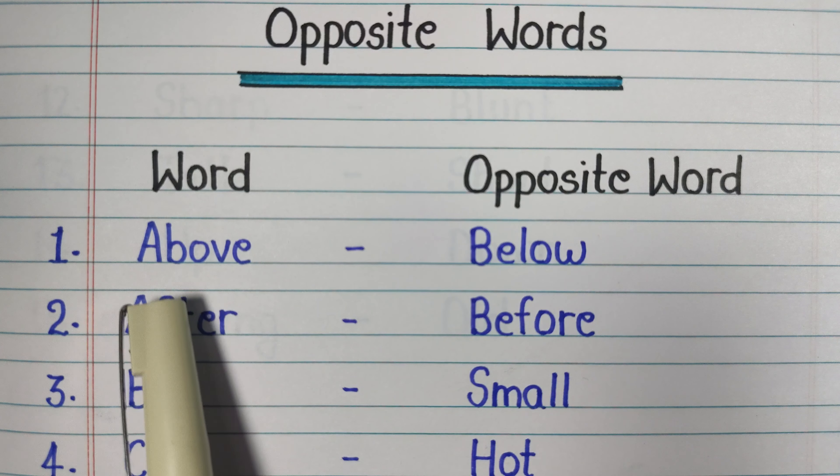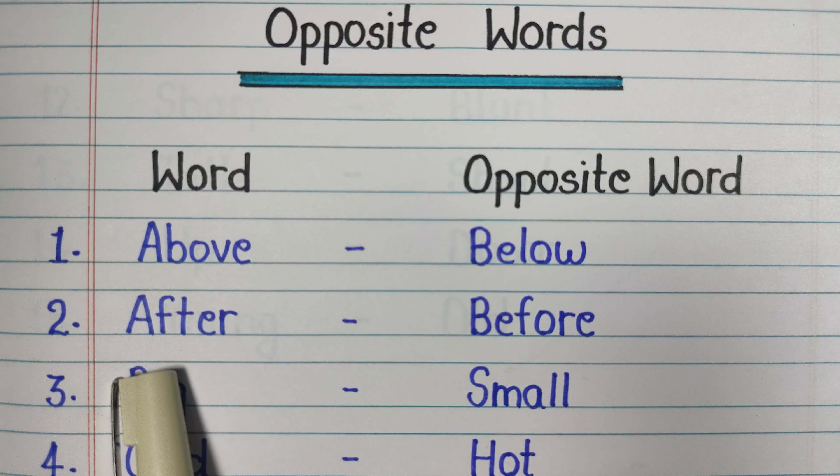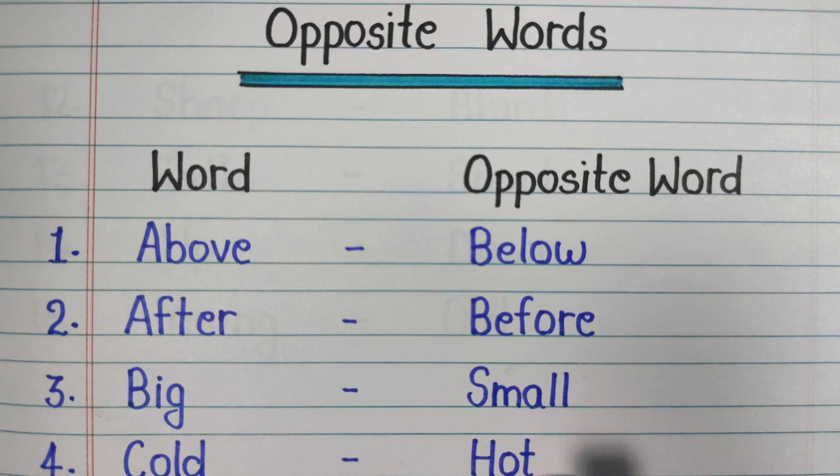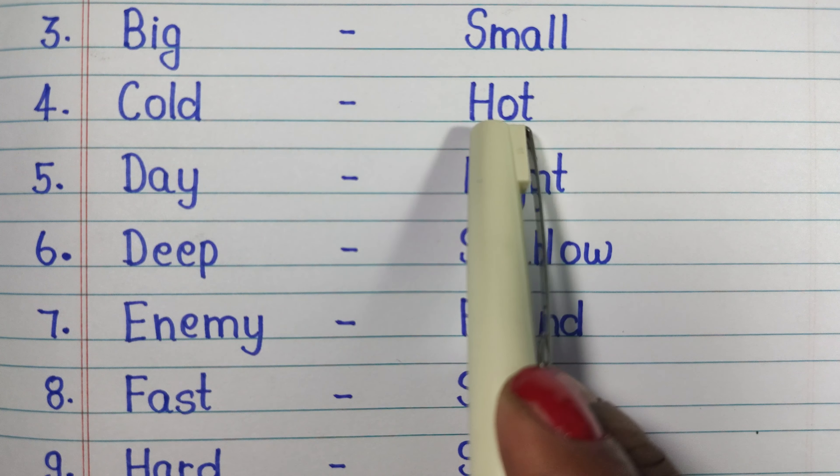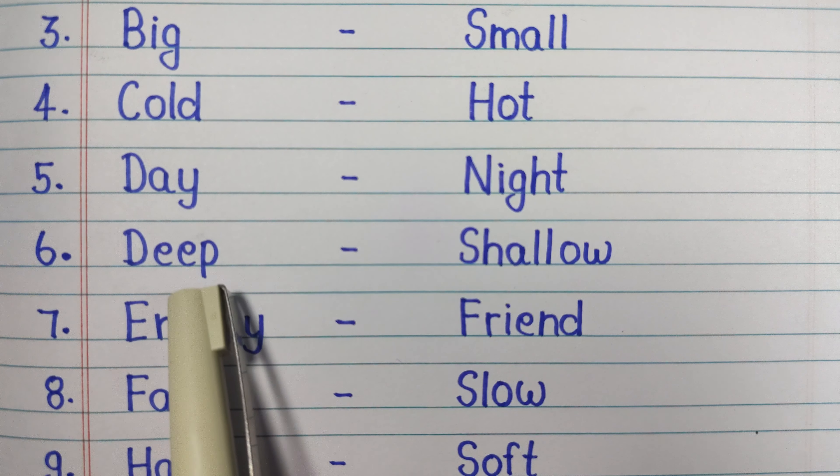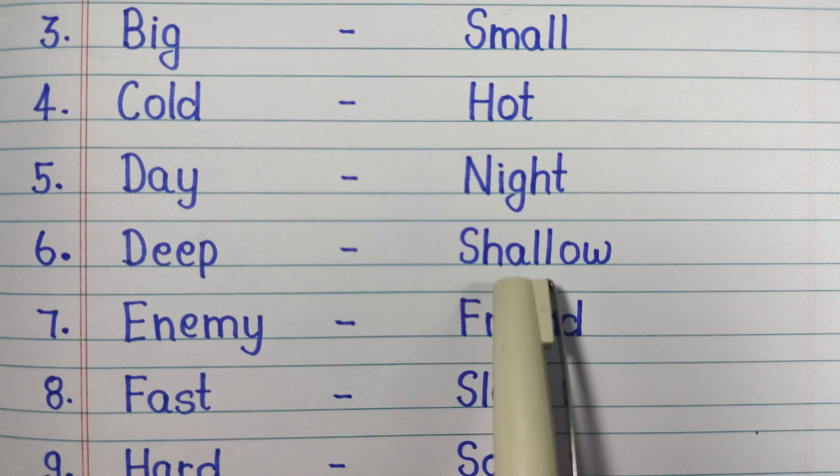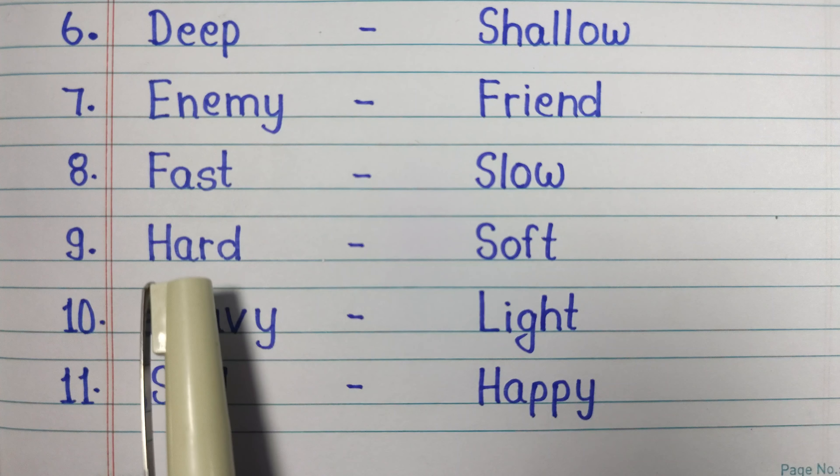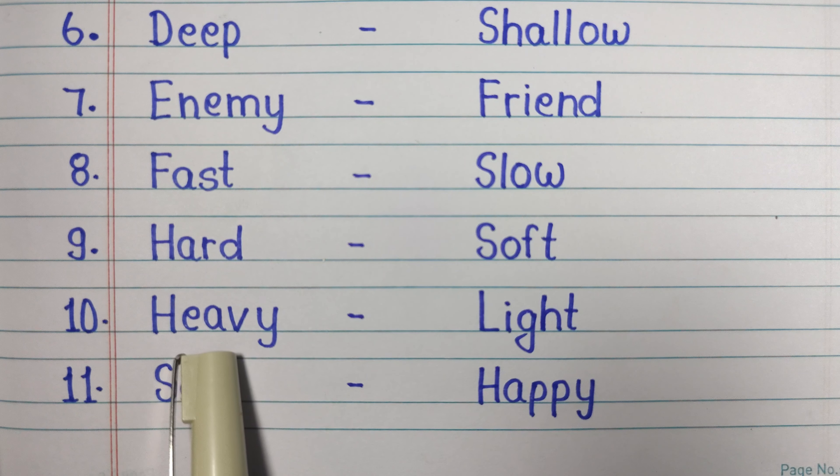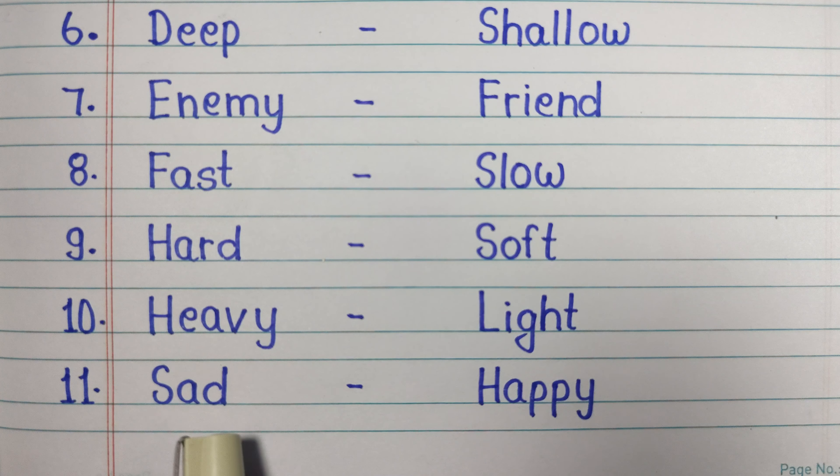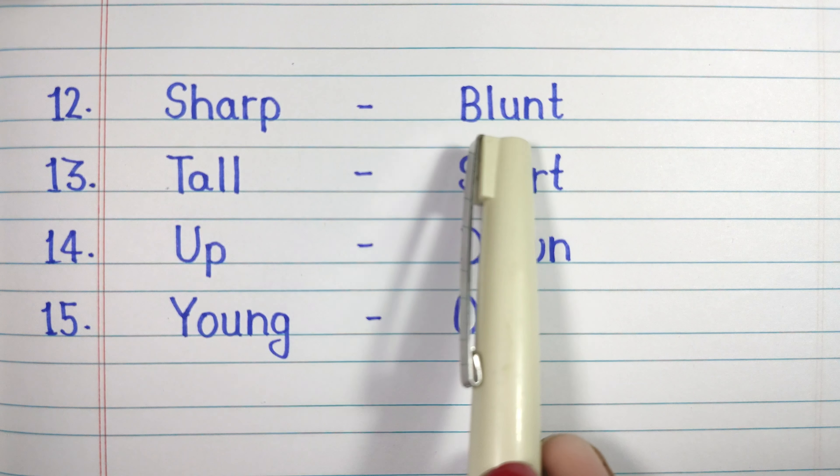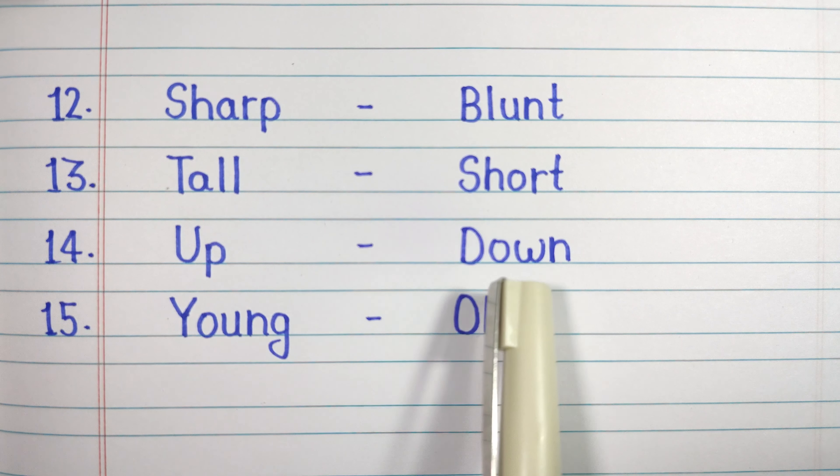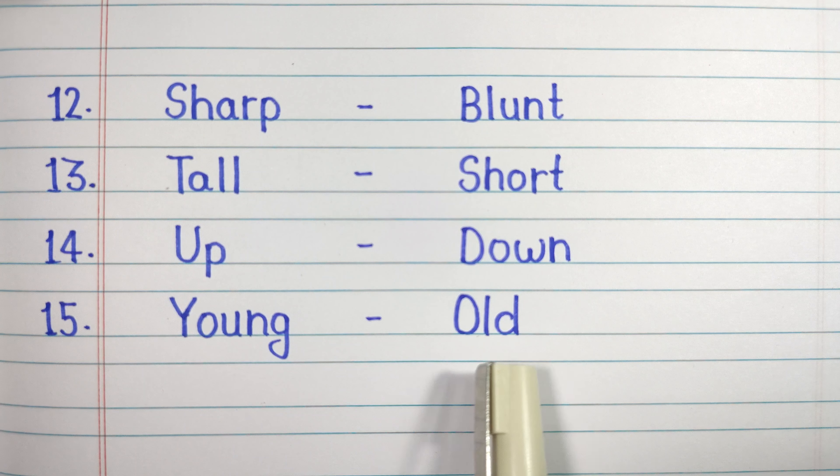Word, Opposite Word. Above, Below. After, Before. Big, Small. Cold, Hot. Day, Night. Deep, Shallow. Enemy, Friend. Fast, Slow. Hard, Soft. Heavy, Light. Sad, Happy. Sharp, Blunt. Tall, Short. Up, Down. Young, Old.